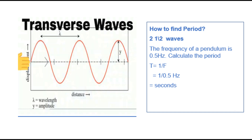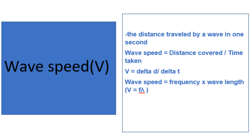Now let's look at wave speed. Wave speed is the distance traveled by a wave in one second. The formula is speed equals distance over time, or using symbols: v equals f times wavelength. That is the formula for wave speed.